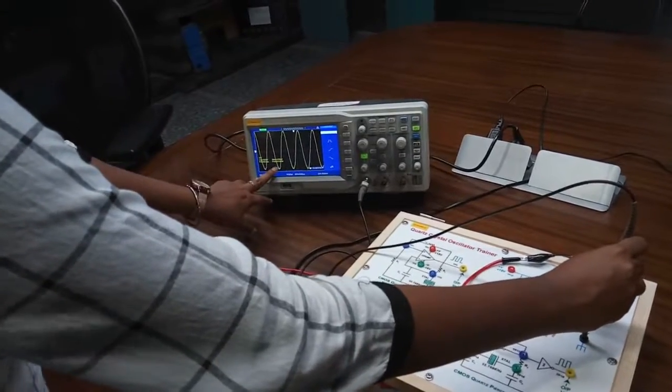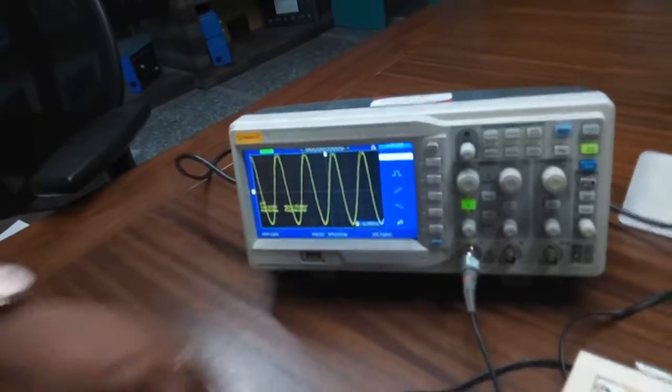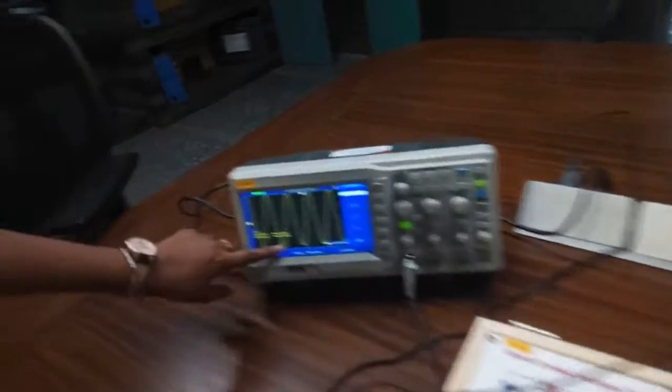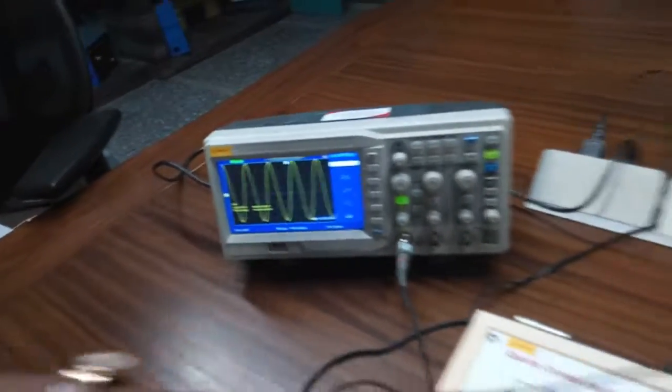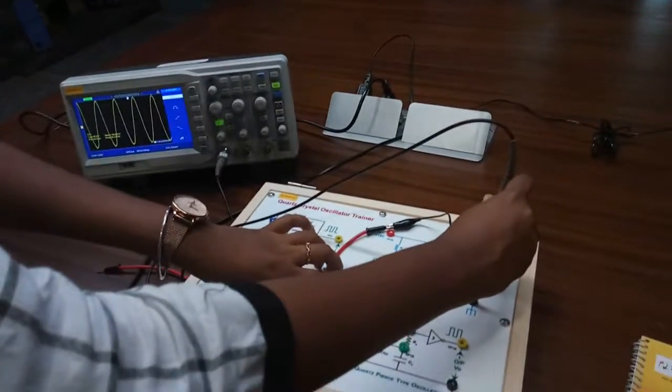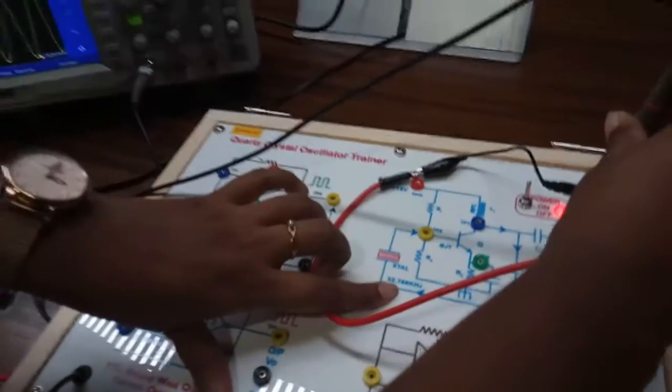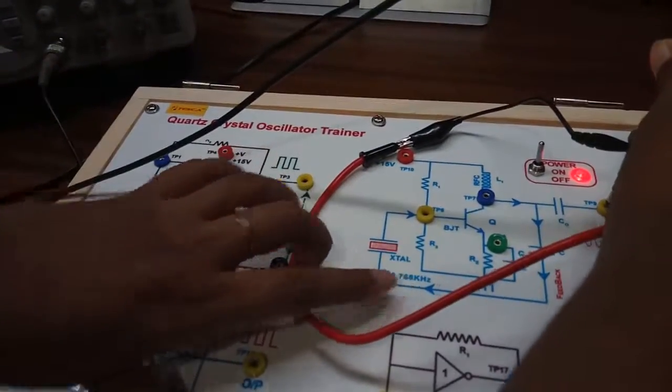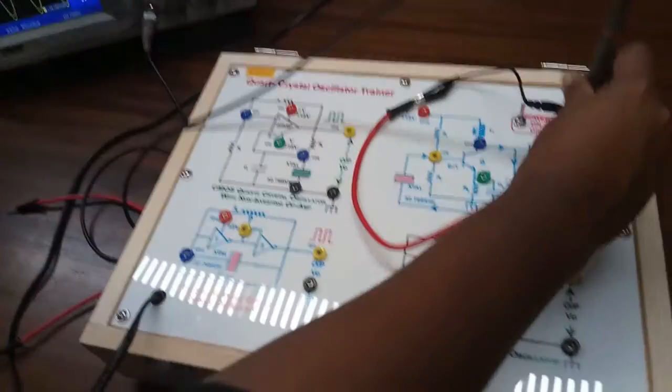Here the frequency is 34.36 kilohertz. This is the frequency we have received from practical experiment, and this is the theoretical frequency: 32.768 kilohertz. Note down this frequency and compare the difference between theoretical value and practical value.